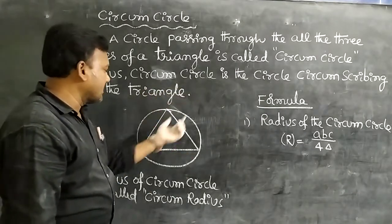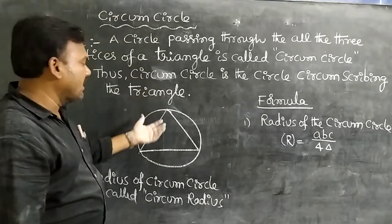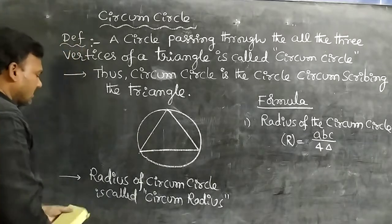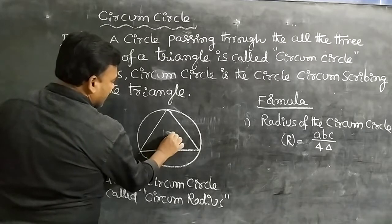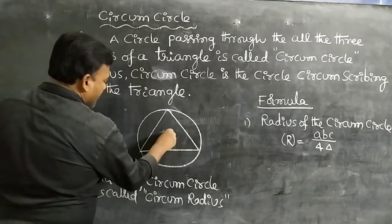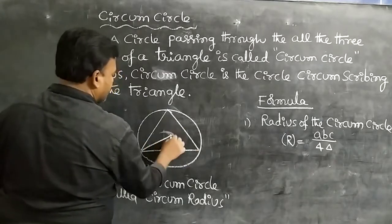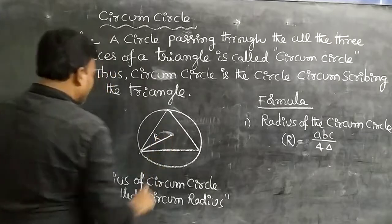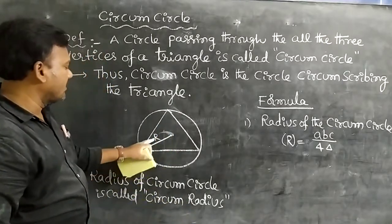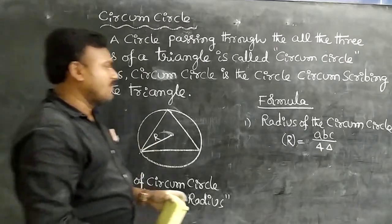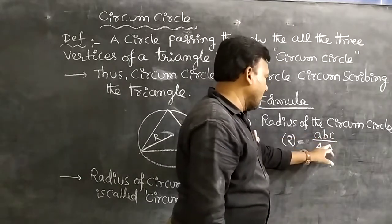A circumcircle is the circle circumscribing the triangle — circumscribing means outside the triangle. The radius of the circumcircle is called the circumradius, denoted by capital R. The formula for the circumradius is: R = ABC / 4Δ, where A, B, C are the sides of the scalene triangle and Δ is the area.